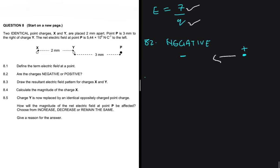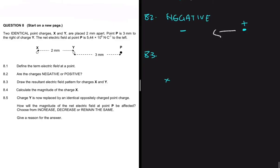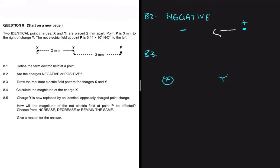For question 8.3, we need to draw the resultant electric field pattern for charges X and Y. Both X and Y are negative. For a negative charge, the electric field lines point towards the charge, so the arrows must be pointing inward towards each charge.